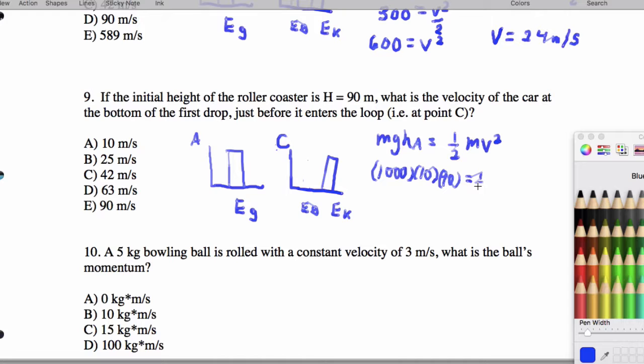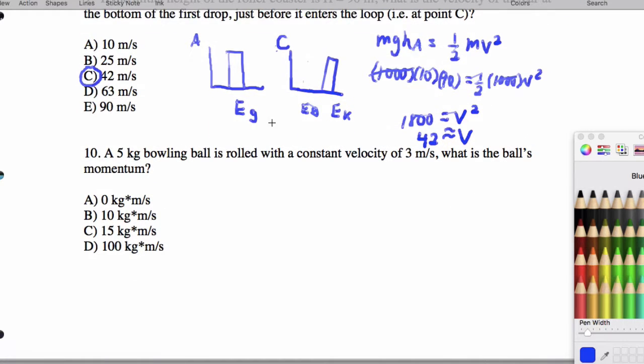1000 times 10 times 90 equals one-half times 1000 times v squared. That's going to give us 1800 equals v squared, and that's going to give us a speed of about 42 meters per second. All right, so again we'll get about 42 for v, and that's it for number 9.